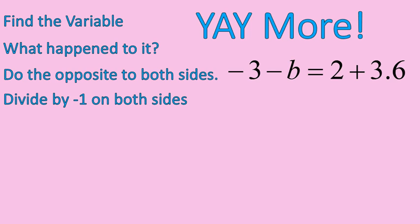All right, I start out by simplifying the right side of the equation. 2 plus 3.6 is 5.6. Now I'm going to find my variable. B is my variable. What happened to B? Well, I have a negative 3 connected with B now, don't I? So if I have a negative 3 connected with B, I am going to add 3 to both sides of this equation.